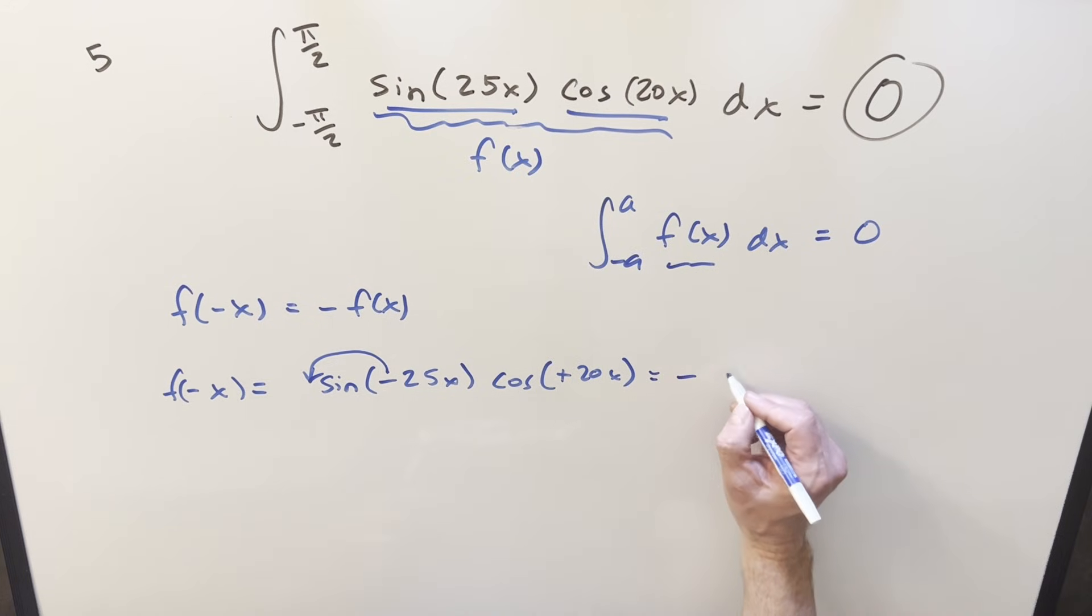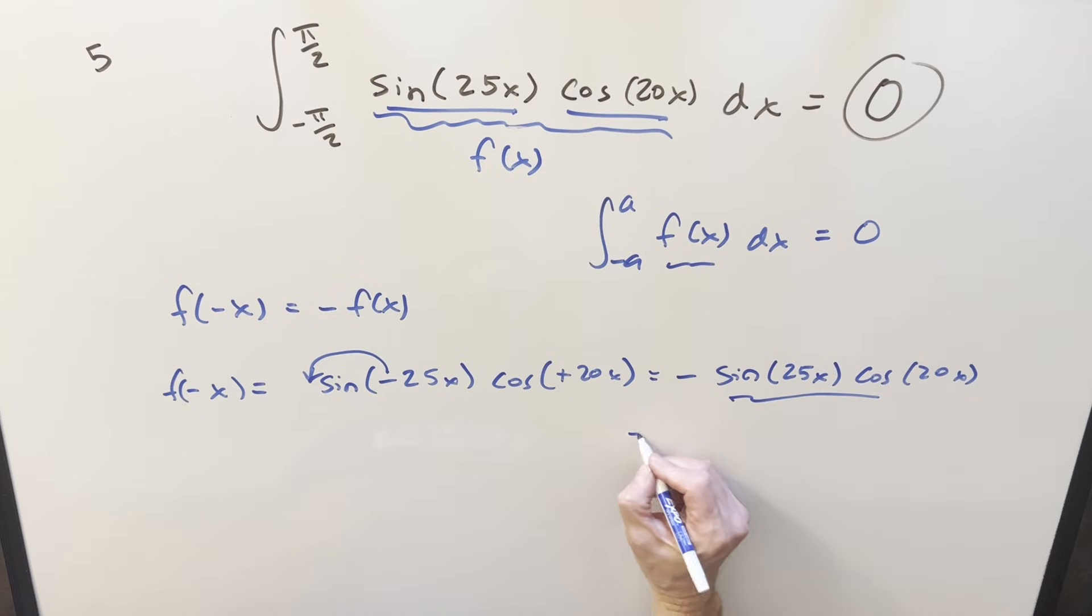And we can take the minus out front here. So rewriting it, we can write this as minus sine 25x times cosine 20x. But then this here is our f of x, so this is minus f of x. So this works,